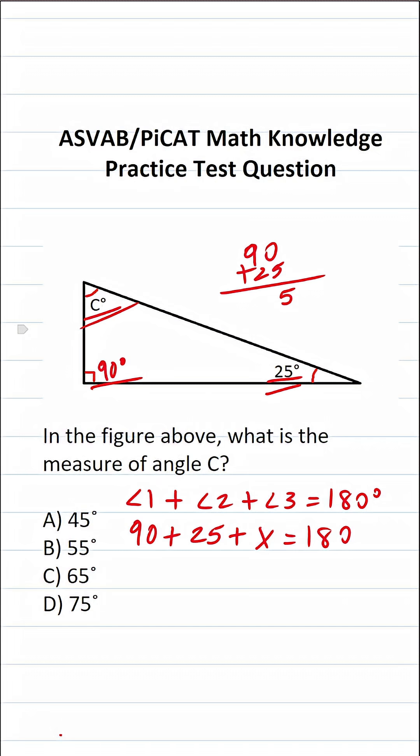0 plus 5 is 5. 9 plus 2 is 11. So this becomes 115 plus X equals 180.